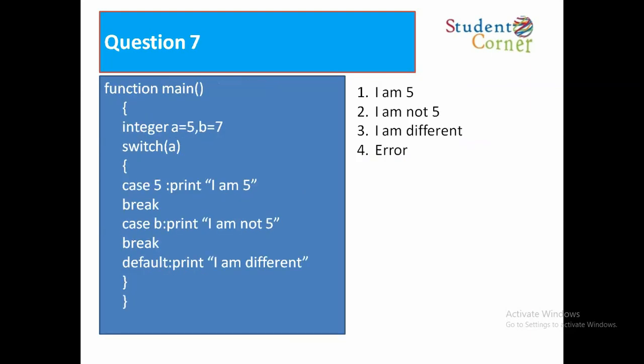Question number 7: Function main, integer a is equal to 5, b is equal to 7. Switch is a, case 5: print I am 5, break. Case b: print I am 0, break. Default: print I am different.